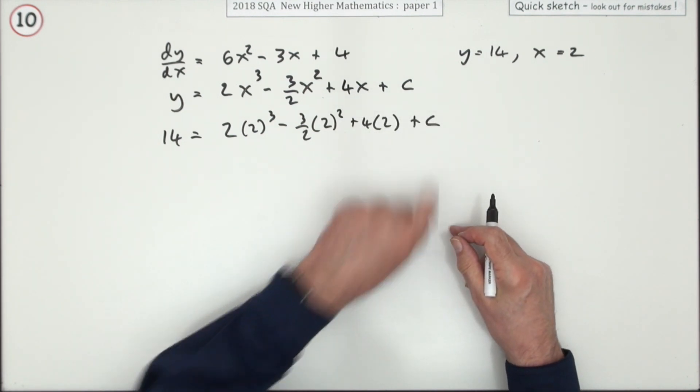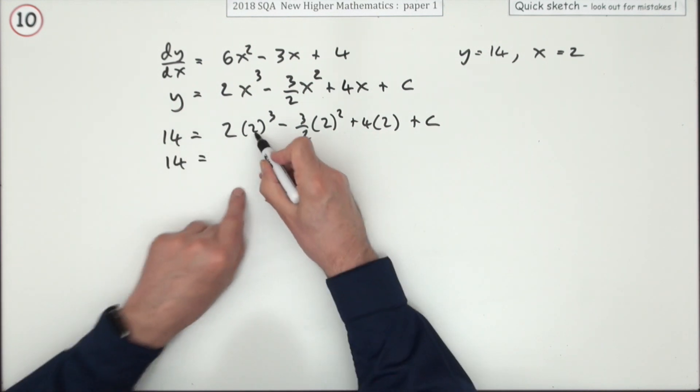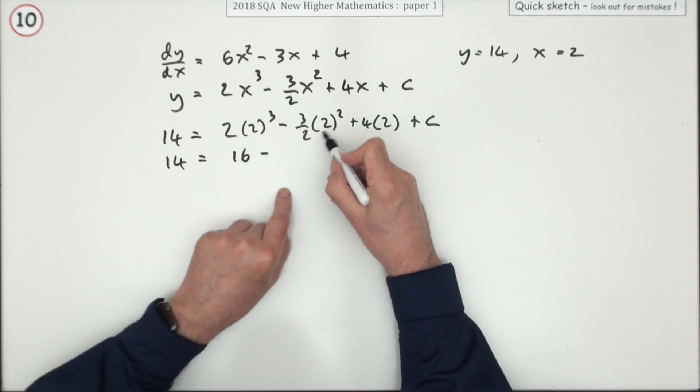Then everything becomes a number apart from C and you can work it out. So what we've got: 14 is 2 cubed is 8, so that's 16 minus, there's just one two left there, so that's 6 plus 8 plus C.